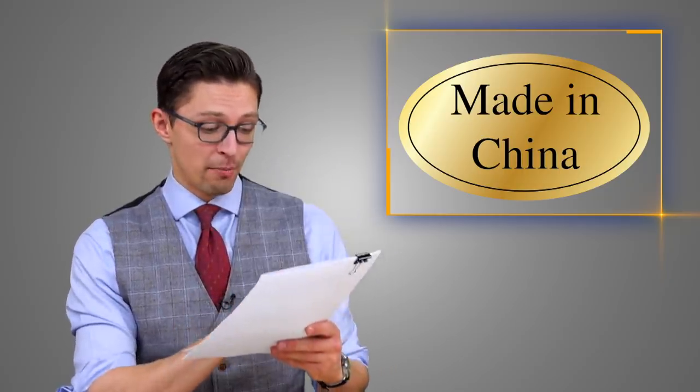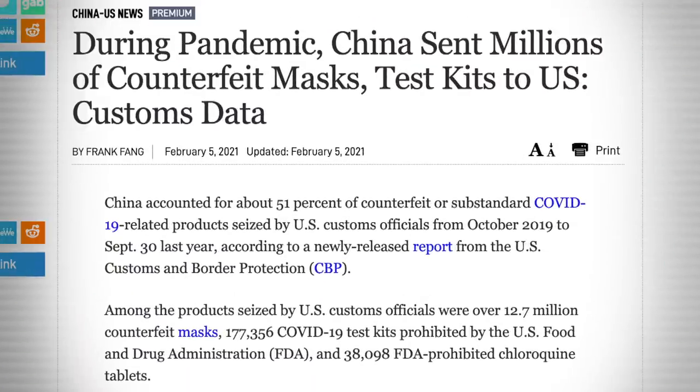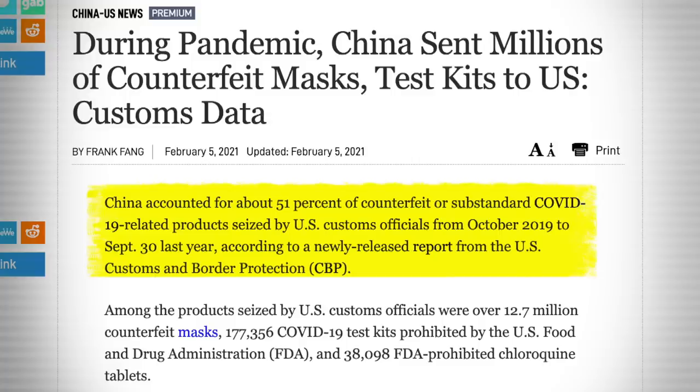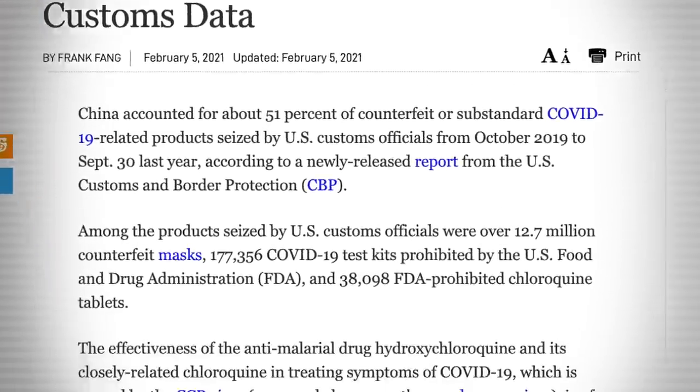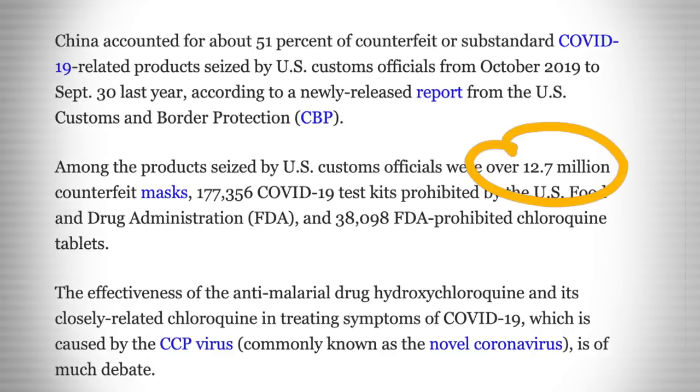Now let's start today's discussion by talking about made-in-China goods. According to this new report from the Customs and Border Protection Agency, over 51 percent of either counterfeit or substandard COVID-related products seized by U.S. customs officials came from China. That data is from the period spanning October 2019 to the end of September 2020. Among the products seized was a staggering 12.7 million counterfeit masks.